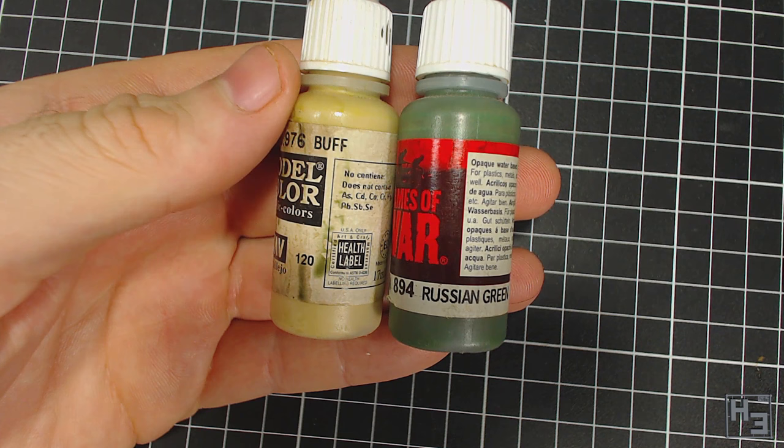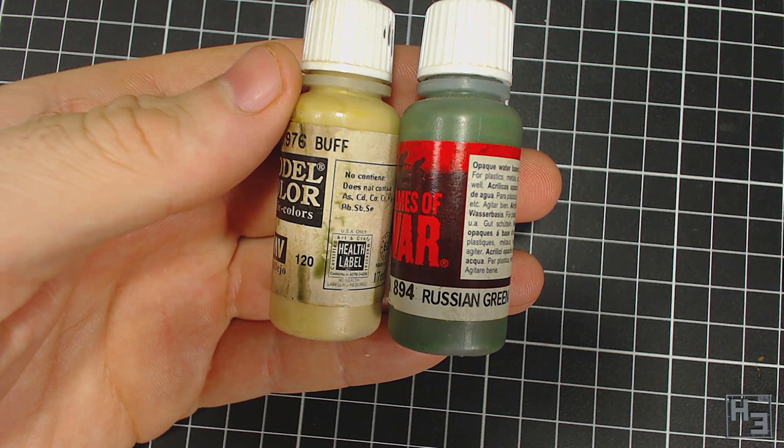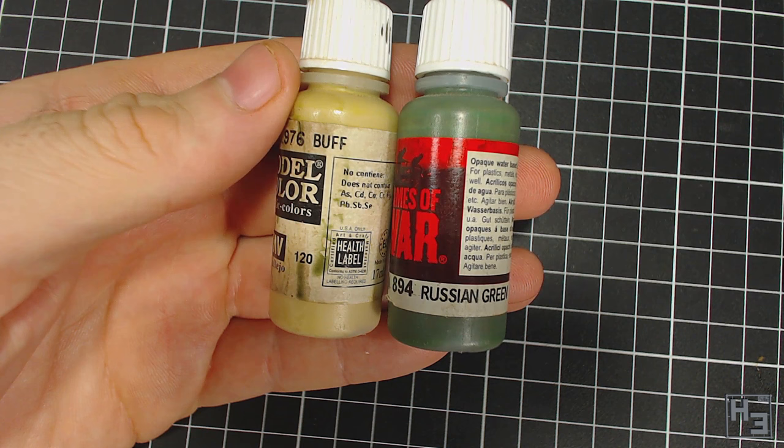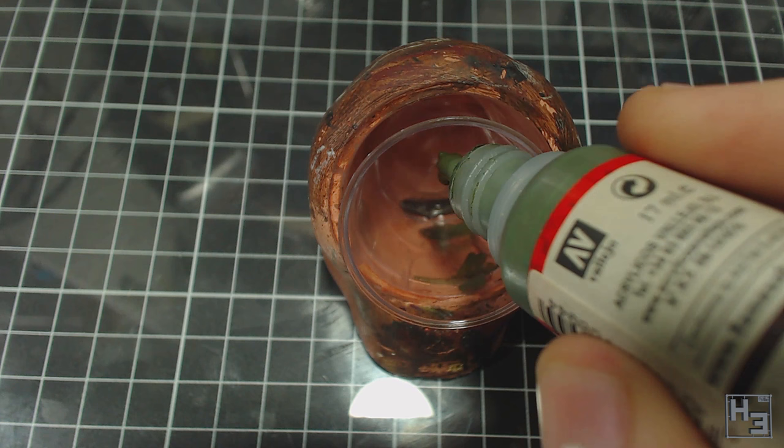In this example I'm going to make a mix of two parts Russian green to one part buff. I usually use buff or another creamy colour for lightening other colours, because I think it looks nicer and more natural than adding white. If you want to try darkening things, try adding a dark grey or brown instead of black.